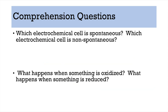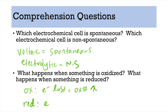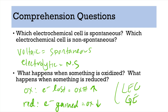To summarize: voltaic cells are spontaneous and electrolytic cells are non-spontaneous. If something is oxidized, that means electrons are lost and the oxidation number goes up. If something is reduced, that means electrons are gained and the oxidation number goes down. You can use LEO says GER to help with whether electrons are lost or gained.